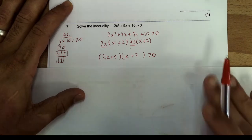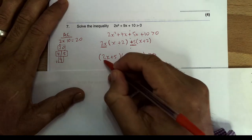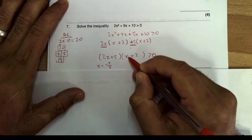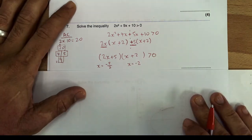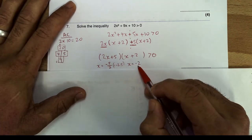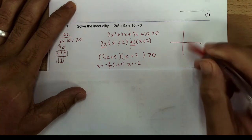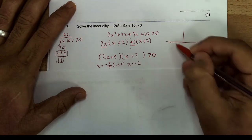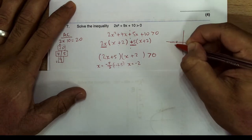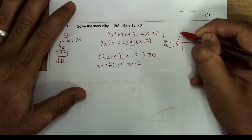I've now got my factorized expression. If it was an equation, the solutions would be x equals minus five over two — that's minus 2.5 — and x equals minus two. But this is an inequality, not an equation, so we do what we did earlier and sketch the curve. A quadratic curve is always a U-shape — that doesn't change even with a coefficient. My two solutions are minus 2.5 and minus 2, so I place those on the x-axis and sketch the curve.